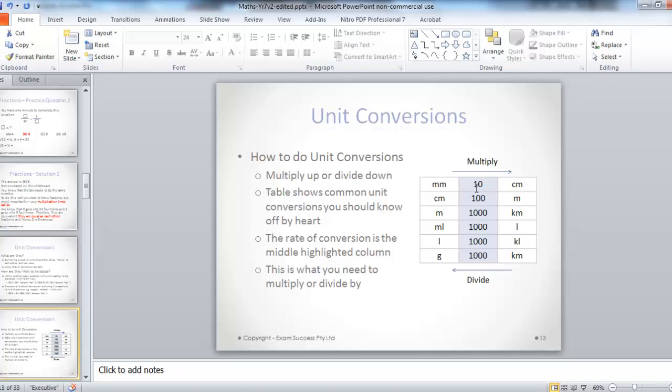So usually it's multiply up or down and they're common rates of units. So one centimetre is equal to ten millimetres. One metre is equal to a hundred centimetres. One kilometre is equal to one thousand metres and then one litre and as it goes.